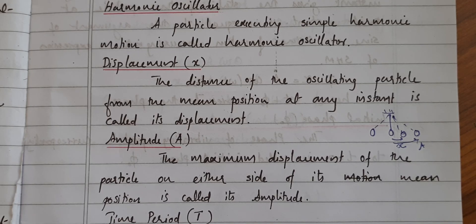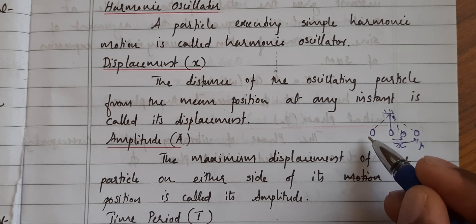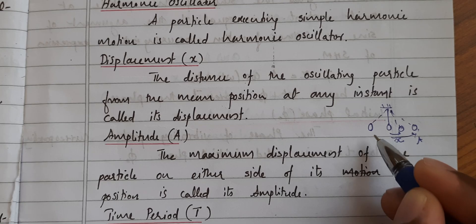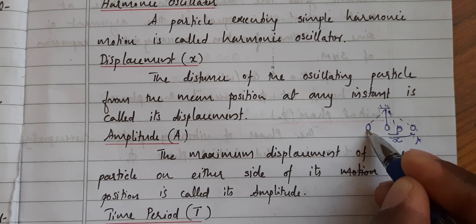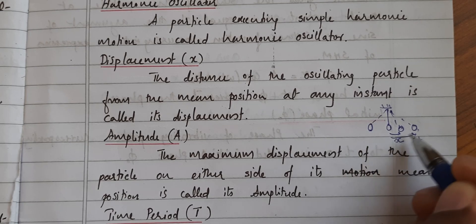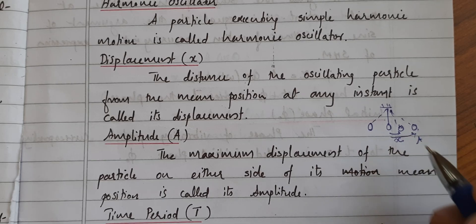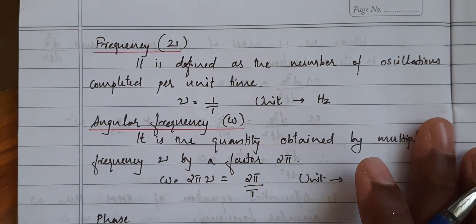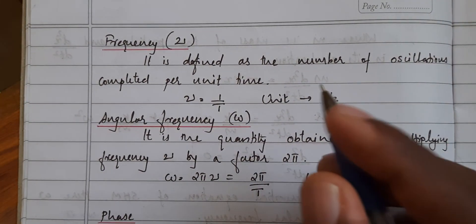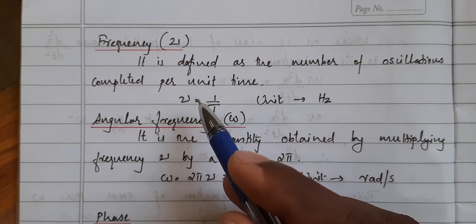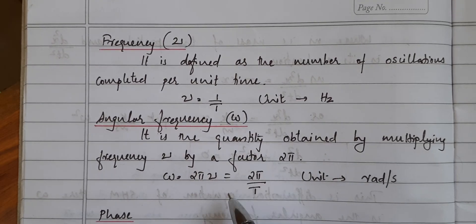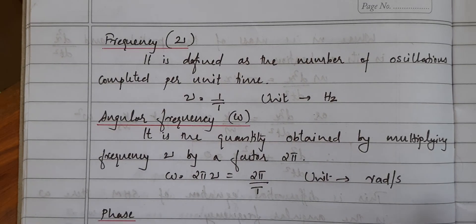The time period is the time taken for one complete oscillation — starting from one side, going to the other, and returning to the same point. Frequency is the number of oscillations completed per unit time; it equals 1/T. And ω, the angular frequency, is another related term.